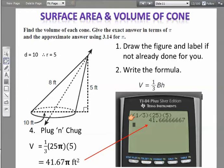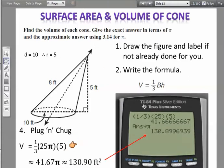Look what I did here in my calculator. I took 1/3 times 25 times 5—I just left π out of the calculation. So I get 41.67π feet cubed for my exact answer. And then I go ahead and take that answer, multiply it by π, and I get approximately 130.9 feet cubed.